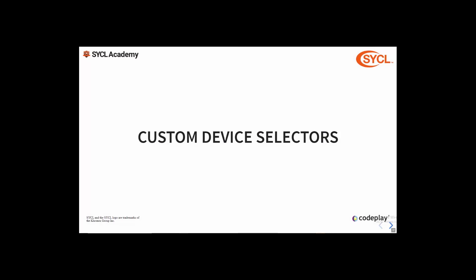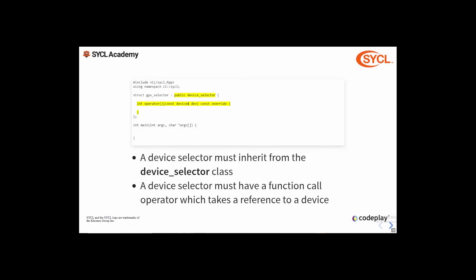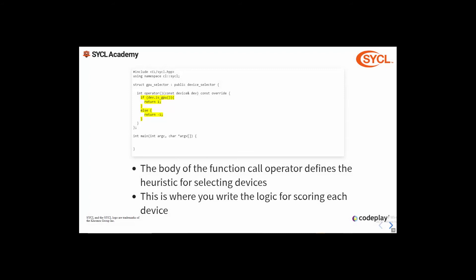So how do we create a custom device selector? A device selector must inherit from the device selector class and provide a function call operator which takes a reference to a device object and returns an integer. The body of that function call operator defines the heuristic — this is how you define how each device is scored, and the value returned is the score for that device. In this example we return a positive score for each GPU device and a negative score for everything else. However, this logic could be much more complex, checking the vendor or the capabilities of the device. If more than one device has the same score, the one chosen is implementation defined.